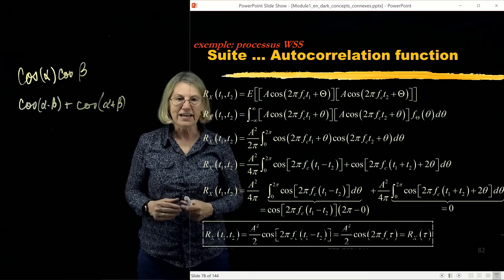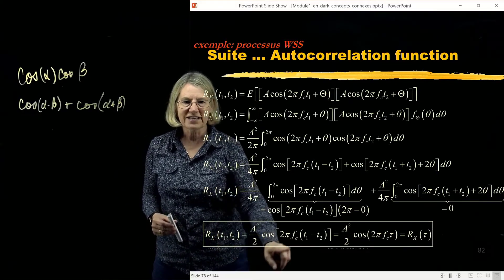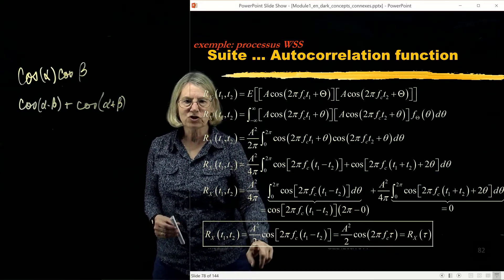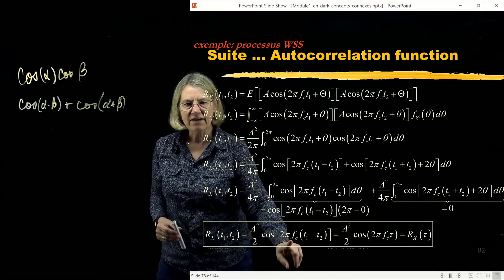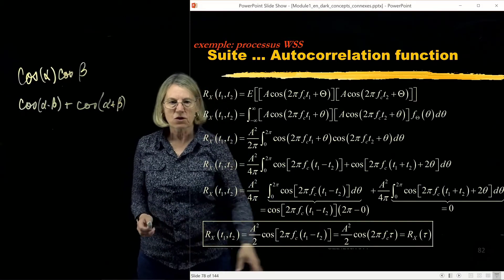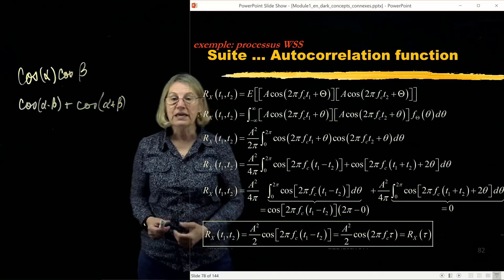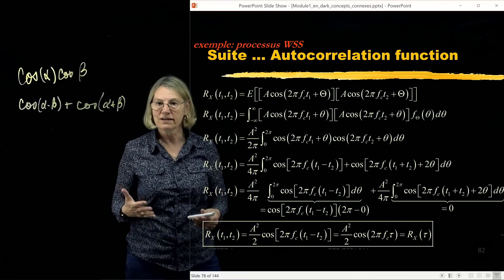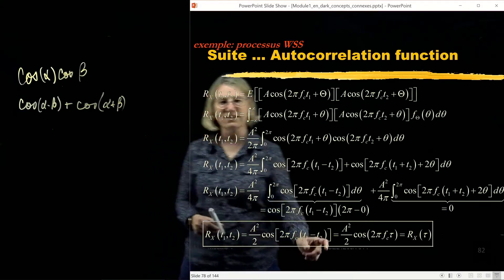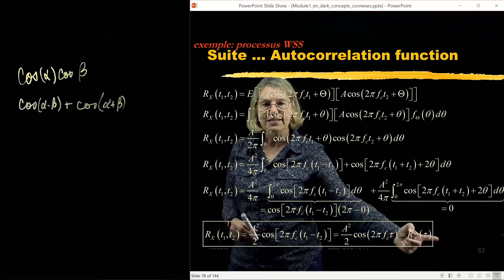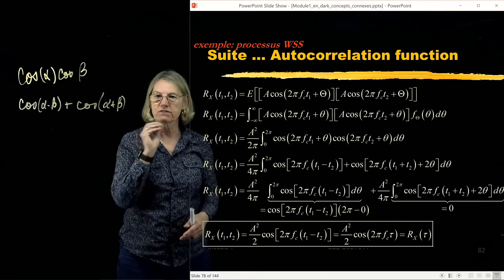So at the end of this calculation, I get that the autocorrelation function is just A² over 2, because I multiply by that 2π, and I have cosine of 2π fc times the difference t1 minus t2. So the only place that t1 and t2 appear here in this expression is in their difference. Therefore I can say that I can give a name to that difference. I'm going to call that difference t1 minus t2, I'm going to call that τ.